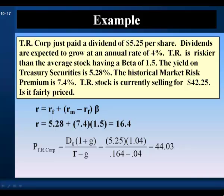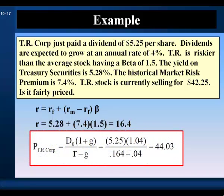Let's look at an example in the use of the capital asset pricing model. TR Corp just paid a dividend of $5.25 per share. Dividends are expected to grow at an annual rate of 4%. TR is riskier than the average stock, having a beta of 1.5. The yield on treasury securities is 5.28%. The historical market risk premium is 7.4%. TR stock is currently selling for $42.25. Is it fairly priced? We recognize that this cash flow stream conforms to a Gordon growth model.